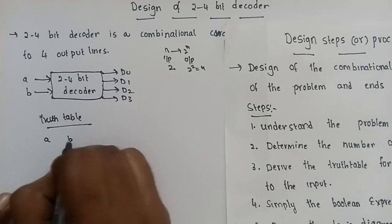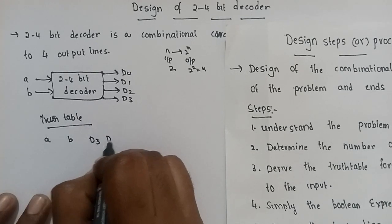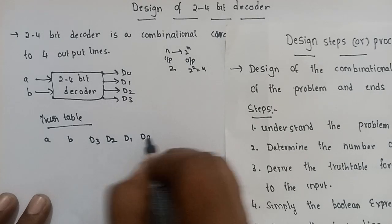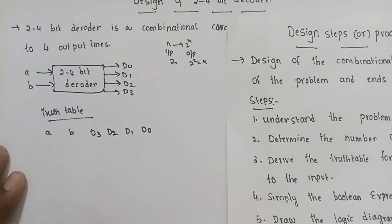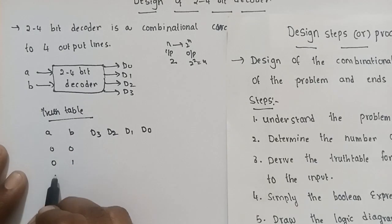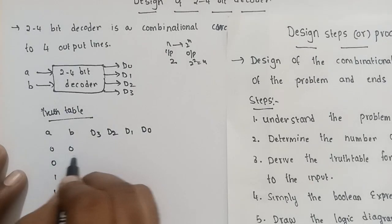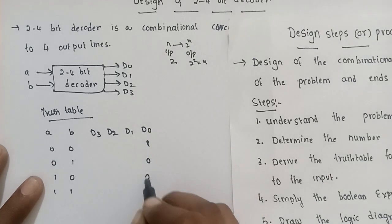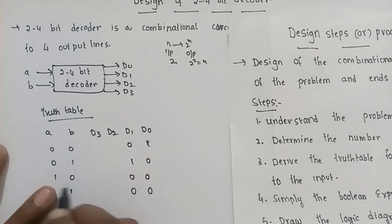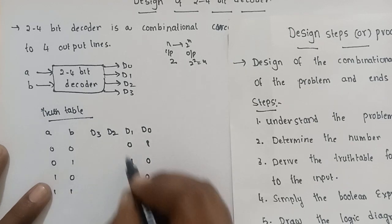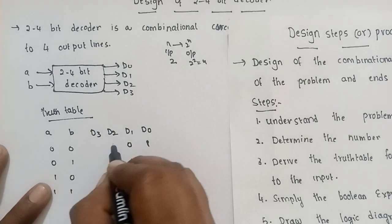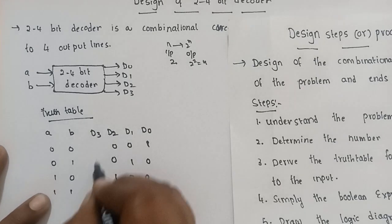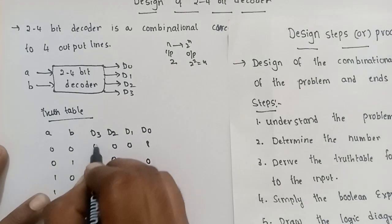The truth table has inputs A and B, and outputs D3, D2, D1, D0. With 2-bit inputs, we have 4 combinations: 0,0 activates D0 output (remaining outputs 0); 0,1 activates D1 output; 1,0 activates D2 output; and 1,1 activates D3 output, with remaining outputs 0 in each case.